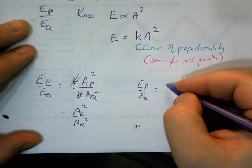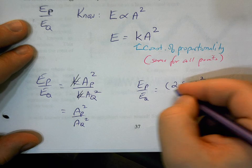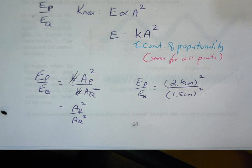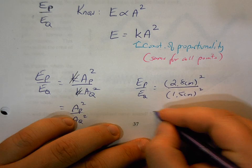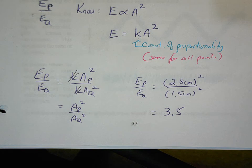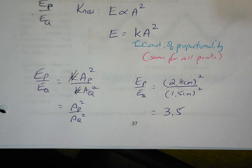At point P we have 2.8 cm and at point Q we have 1.5 cm, so we calculate (2.8)² / (1.5)², which gives us about 3.5. This tells us that because P has a greater amplitude, the energy at P is about 3.5 times greater than at Q. That's how we use the relationship between energy and the square of the amplitude.